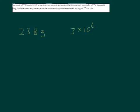But we're after the mean and variance for 50 grams. So let's do 1 gram - that's 3 times 10 to the 6 divided by 238. And then 50 grams is obviously that number times 50.